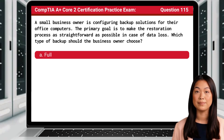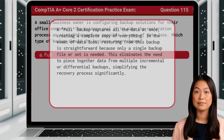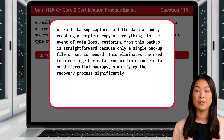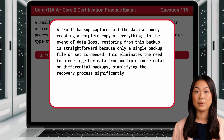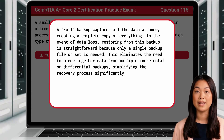A full backup captures all the data at once, creating a complete copy of everything. In the event of data loss, restoring from this backup is straightforward because only a single backup file or set is needed. This eliminates the need to piece together data from multiple incremental or differential backups, simplifying the recovery process significantly.